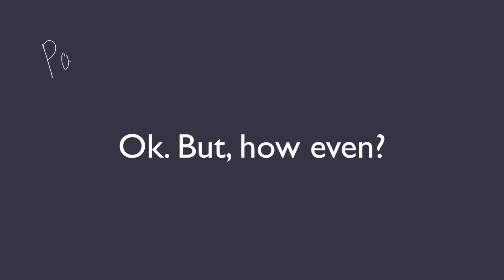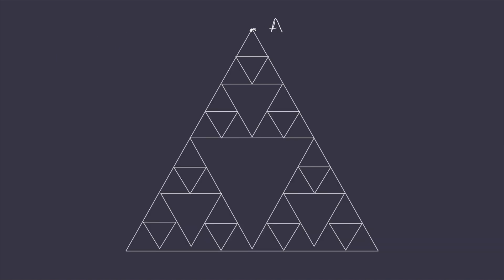Here's something you can try out yourself with a piece of paper at home for some intuition. Draw out a Sierpinski's triangle, then choose a point that is part of the triangle and play one step of the chaos game. If you do it correctly, the new point will end up in a similar location on a smaller triangle near the corner. If you pick a point on the Sierpinski's triangle and play the chaos game, you'll only ever end up on points that are also part of the Sierpinski's triangle.